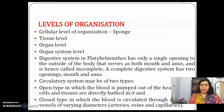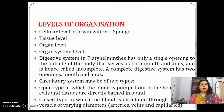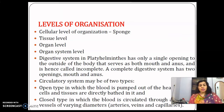Then we go on to describe the tissue level, where a group of cells perform a single function. Organs are groups of tissues performing a single function. And then we have the organ system level, where different organs work together.